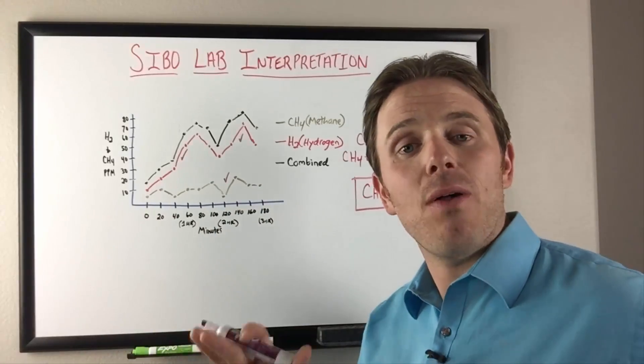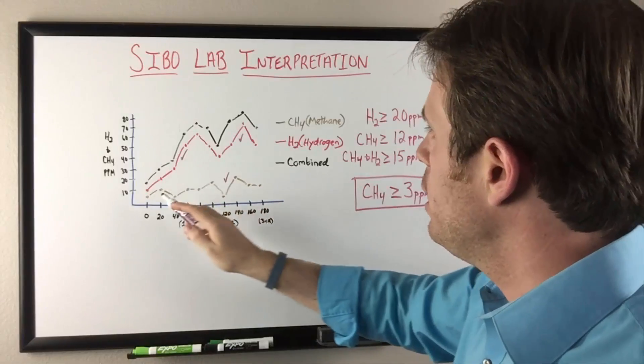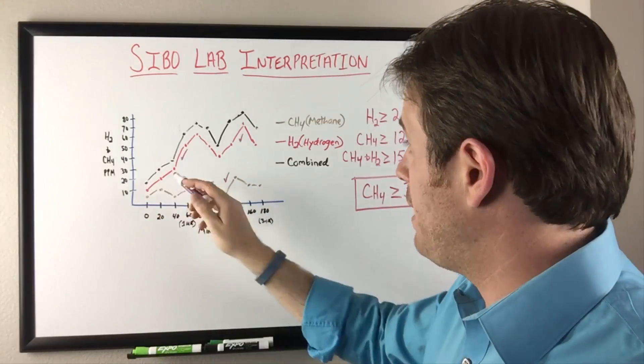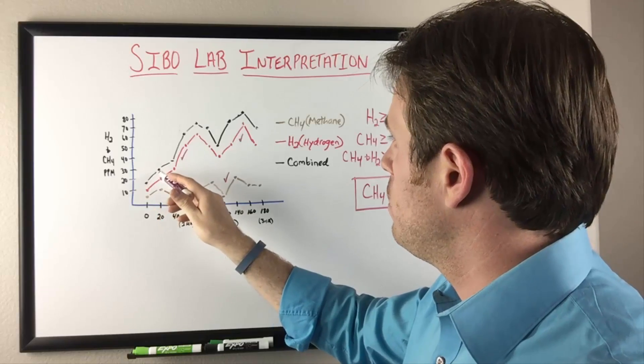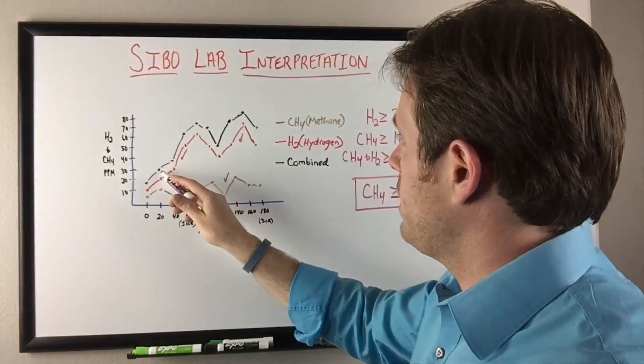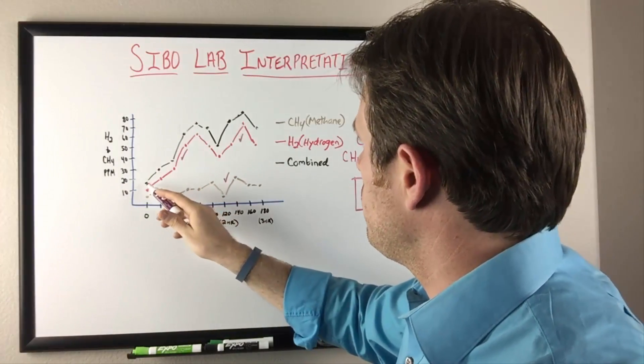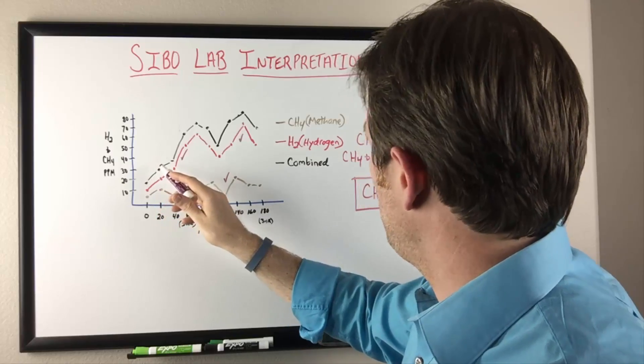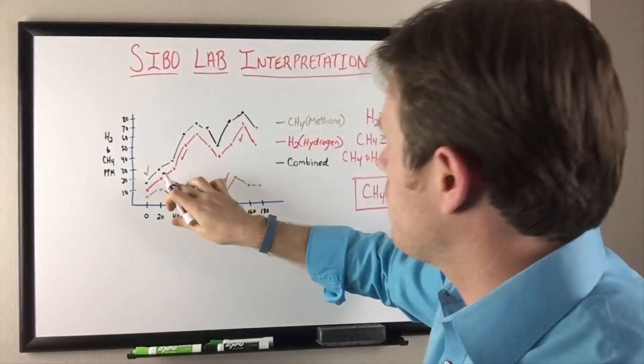We did hydrogen, we did methane, now let's do the combo. Our combo is going to be in black. We have 15 here, which is basically the red plus the brown. So we have 15, 15 to second sample at 30. So 15 to 30, and that's a positive right there, because that's a combo of 15.